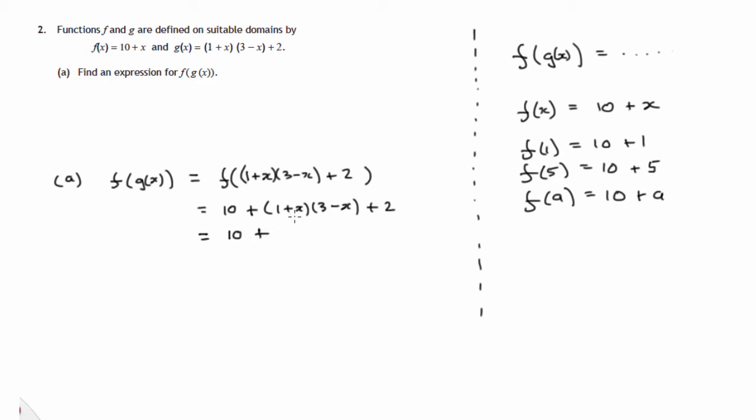So let's try and sort this out. 10 plus, let's do firsts, outsides, insides, lasts. The first gives us 3, outside 2 minus x, inside 3x, and the last's negative x squared.